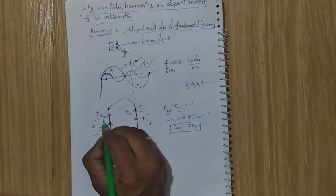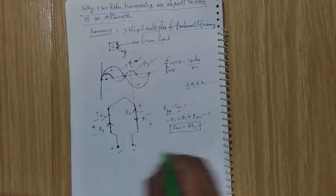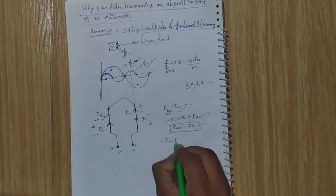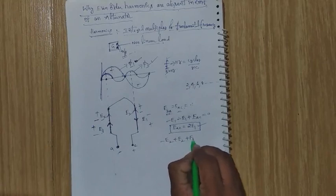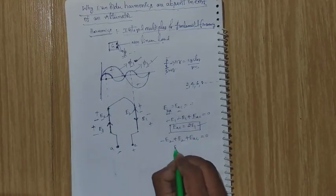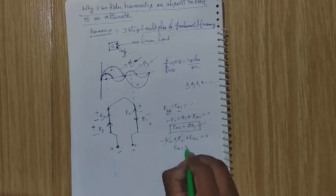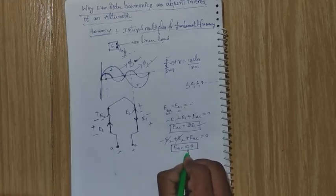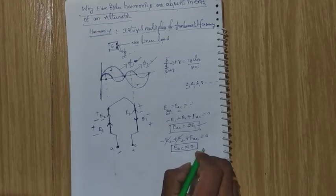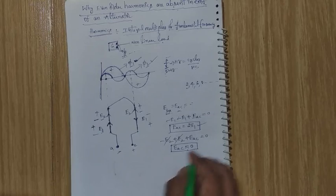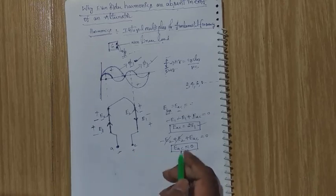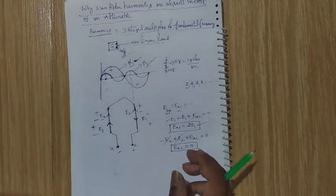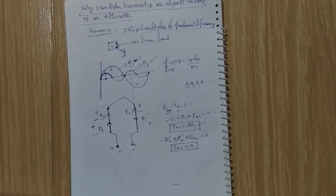Now considering the second harmonic induced EMFs, applying KVL: minus e₂ plus e₂ plus eac equals zero. These two cancel each other, so eac equals zero. The resultant second harmonic EMF is zero. Therefore, there are no even-order harmonics in the EMF of an alternator due to symmetry. Thanks for watching.